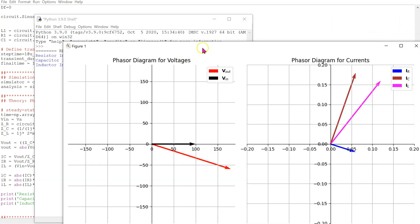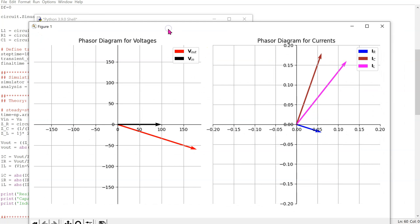We can also plot the phasor diagrams. We can see that in this case, the output voltage in red lags the input voltage. Also, for the currents, the current through the capacitor and inductor lead the input voltage, while IR lags the input voltage. The voltage and current phasor diagrams are plotted separately for clarity as they have different magnitudes.